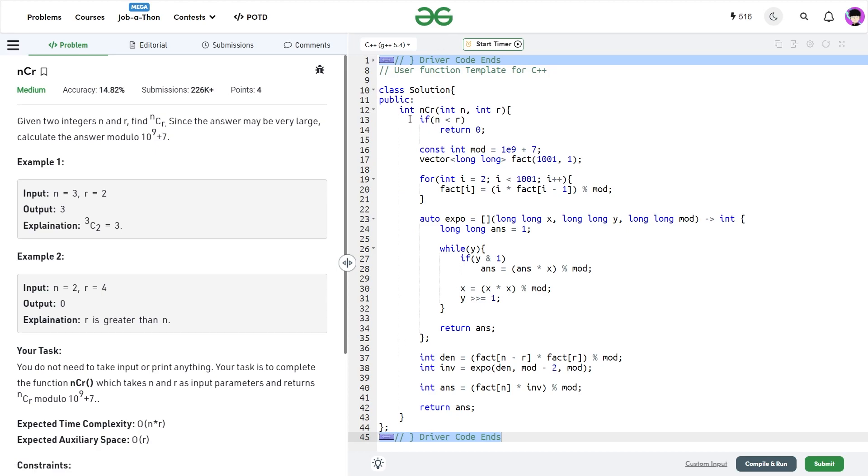What I've done is I've taken two integers n and r, and whenever if n is less than r I just return 0. Otherwise what I do is I calculate the value of mod first, so this is just some basic setup, and I'm storing it in a constant integer.